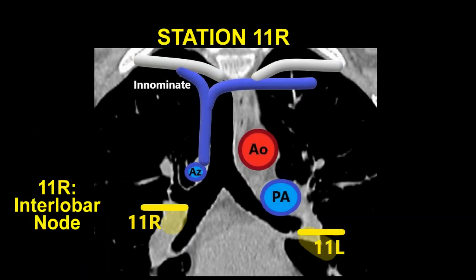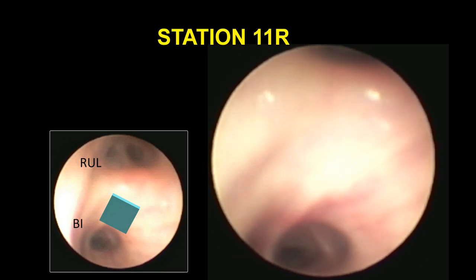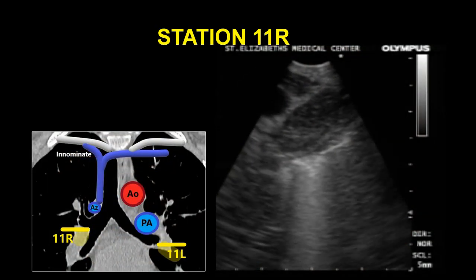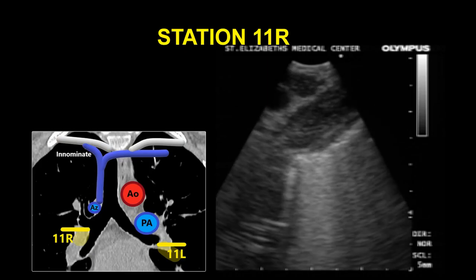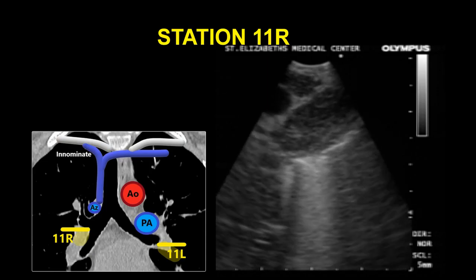Station 11R and 11L, the left and right interlobar lymph nodes, are those that are located between the origin of the lobar bronchi. Station 11R superior includes nodes located between the right upper lobe bronchus and the bronchus intermedius. To visualize this station, the EBUS scope can be moved to the proximal bronchus intermedius just below the secondary carina, with the probe oriented towards the right lateral wall, scanning the area between the 2 o'clock and 4 o'clock positions. The lymph node and interlobar artery at the 9 o'clock position can be seen.